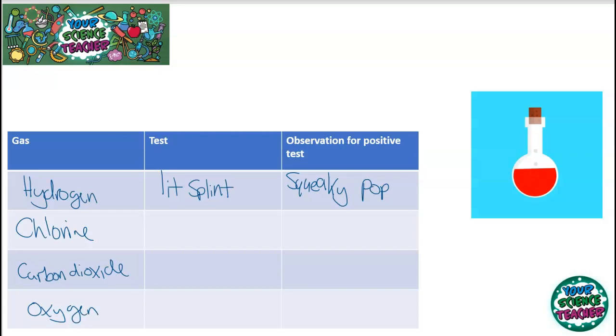For chlorine, what you need to do is put in damp litmus paper in with the gas and what happens to that damp litmus paper is it bleaches white. With carbon dioxide, you'll have probably done this many times, you bubble through lime water and what you should observe is a cloudy precipitate.